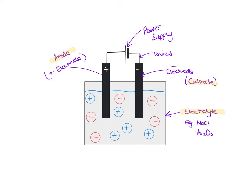The idea of electrolysis is that we can split something up using electricity. If we split that word up, 'electro' is to do with electricity and 'lysis' means to split. So we're taking an ionic compound like sodium chloride and splitting it up to make sodium and chlorine. You might take aluminium oxide and split it using electricity into aluminium and oxygen. You should know that for metals at the top of the reactivity series, electrolysis is the best way to extract them because they're too reactive to reduce with carbon — things like potassium and aluminium.